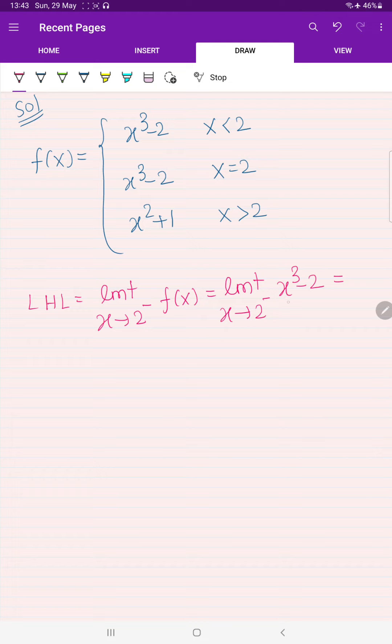We are approaching it from left hand side, f of x will be x power 3 minus 2. What will be the answer? If I will substitute in place of x, replace it by 2. 2 power 3 will become 8. 8 minus 2 will be giving you 6. Similarly, take the right hand side limit. Right hand side limit means x, we are approaching the value of x from right hand side.